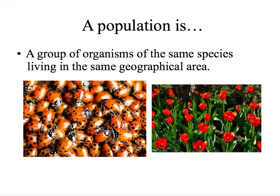Here we have two examples of populations. We've got a population of ladybugs, because they're all the same species and they're all living in the same area. We also have a population of tulips, because they're all tulips and they're living in the same area. So those are both populations.